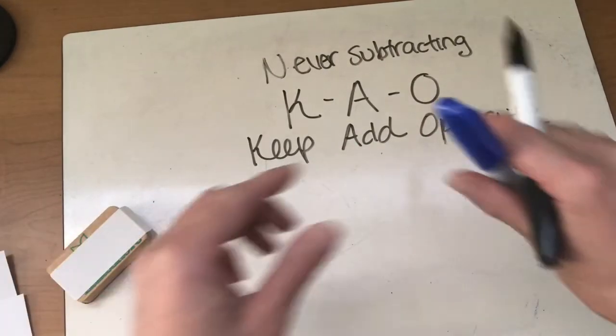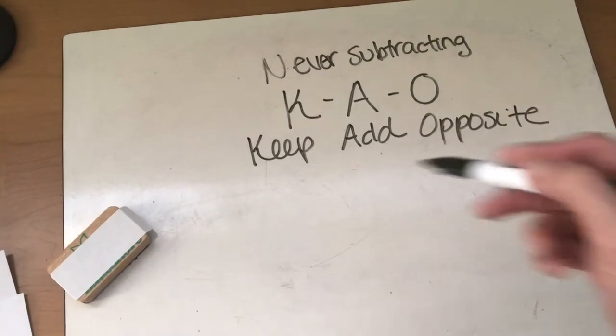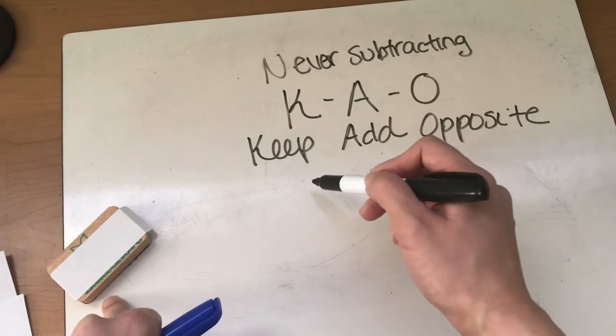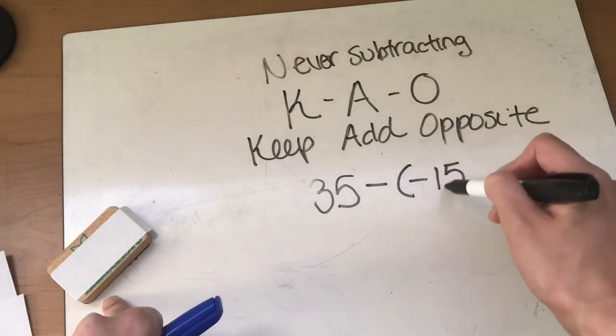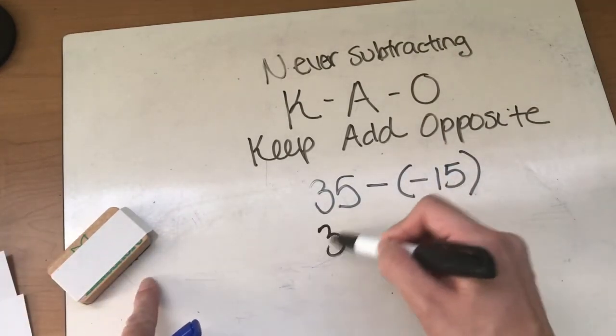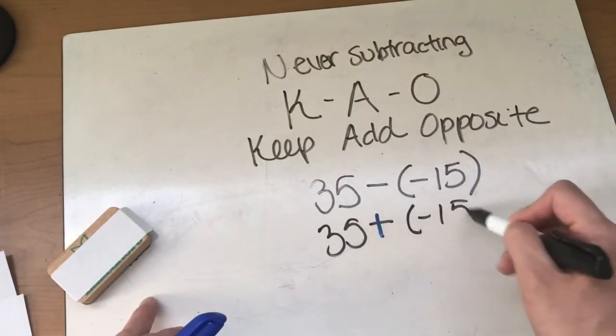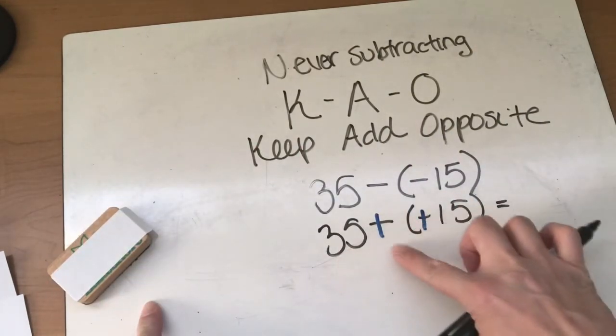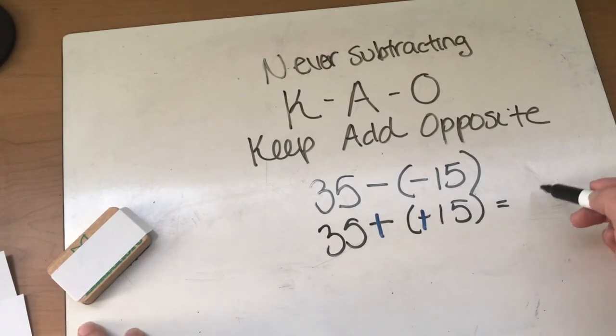And we are just going to keep on going. I will do probably 10 to 15 examples with my students until they can tell me: Keep add opposite. Keep add opposite. And it really seems to help. We can even do a little bit of a bigger number. 35 minus negative 15. Okay, we are never subtracting. So we're going to keep that 35. We're going to change our subtraction to an add. And what's the opposite of negative 15? Positive 15. Oh look, so now we just have a simple 35 plus 15. And my answer is going to be 50.